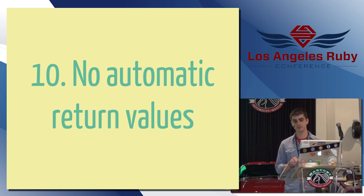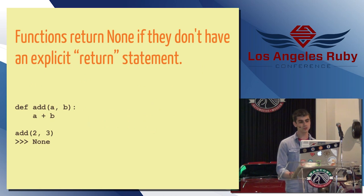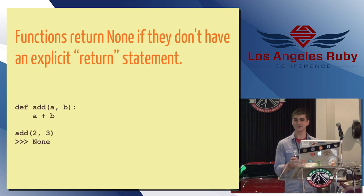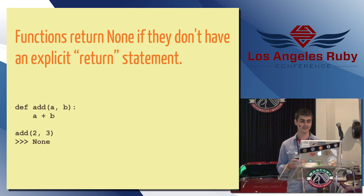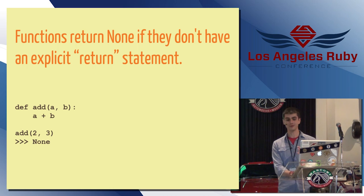There's no automatic return values in Python. Again, I like this feature in Ruby. I'm sad it's not here. But functions will return none if they don't have an explicit return statement. So if I'm writing some Python and I just wrote some Ruby the day before, maybe I'm still in that mindset. I'll do something like this, and I won't put explicit return statement, and I'll get none, and I'll kind of be confused. But maybe I wouldn't if I only wrote Python.